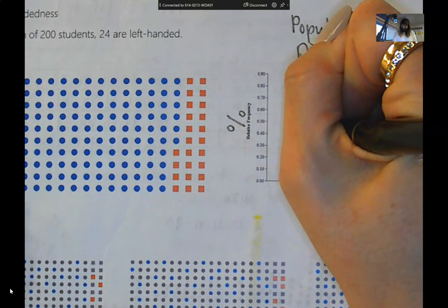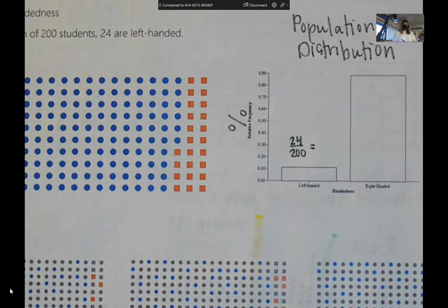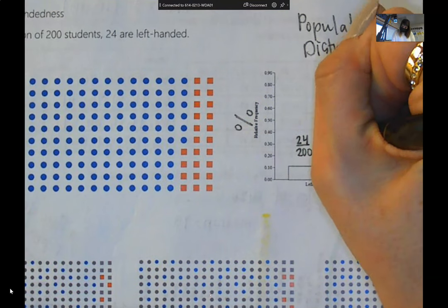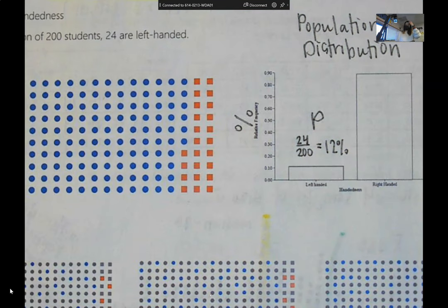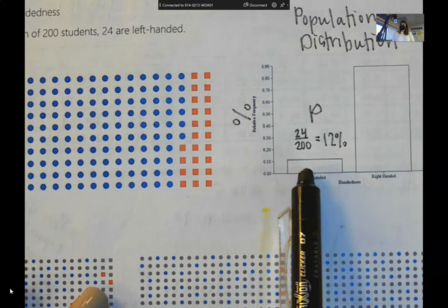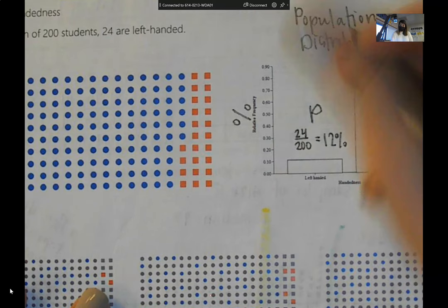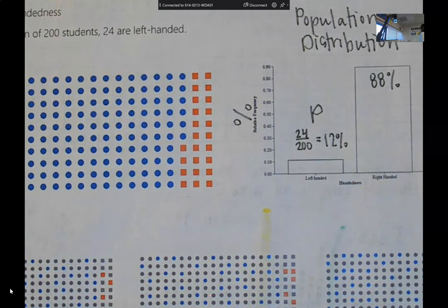You can see that this is relative frequency. So just remind yourself that that's percent. Relative frequency is percent. And if we just wanted to verify, we could take 24 out of 200 and change that to the percent. So we would do 24 divided by 200. That's 12%. So we're looking at the percent of left handed students. So what we just calculated was P. P is 12%. This bar represents 12%, which means this bar is 88%.